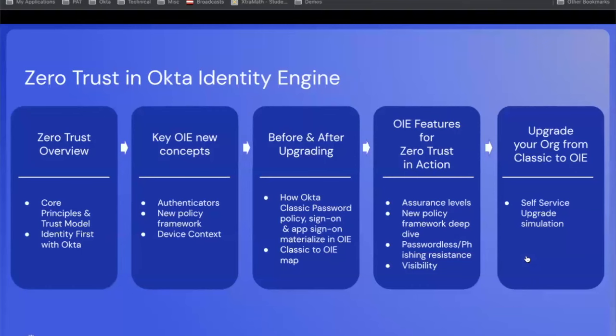Today in our presentation, we're going to start by getting an overview of zero-trust principles and how Okta can help you address those principles. We'll then review some new concepts in Okta Identity Engine that are maybe new for those of you on Classic. We'll do a quick review of what to expect before and after upgrading to OIE, then dive into how OIE features can help address zero-trust use cases, and finally walk through the self-service upgrade process to upgrade your Classic org to an OIE org. And now for an introduction to zero-trust concepts, I'm going to turn it over to my colleague Steve.